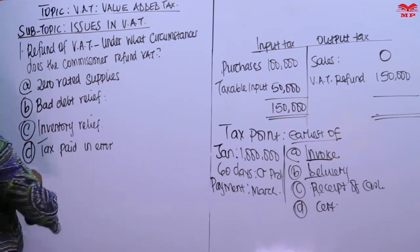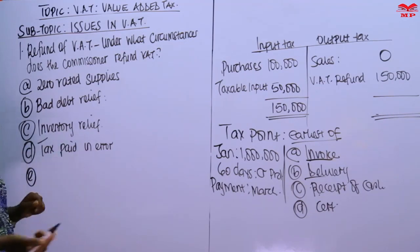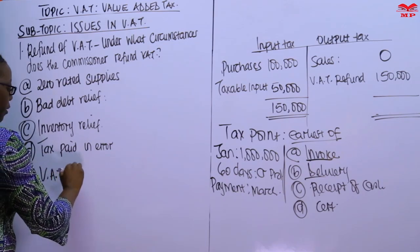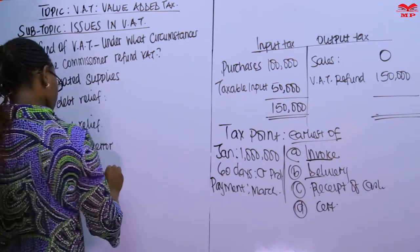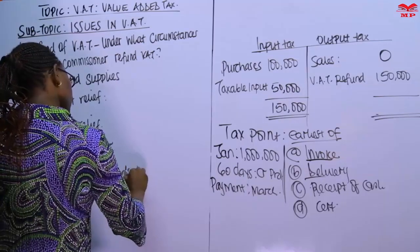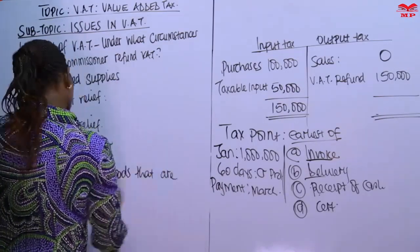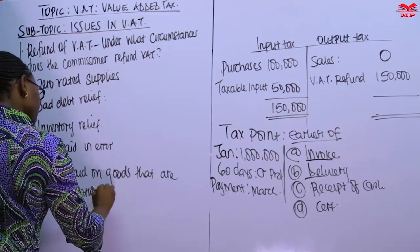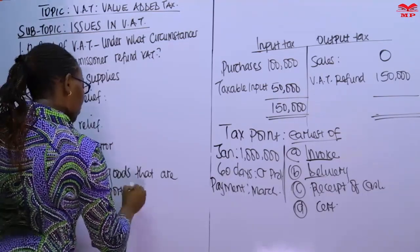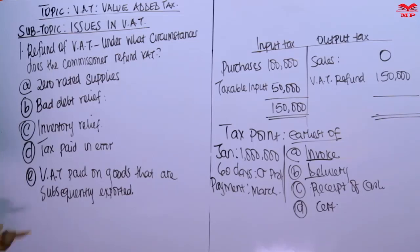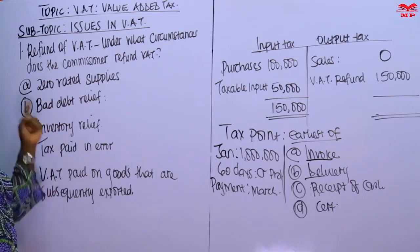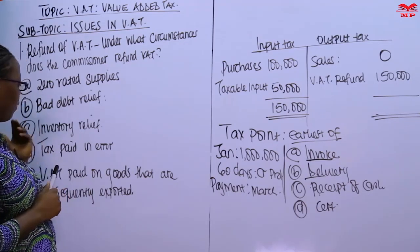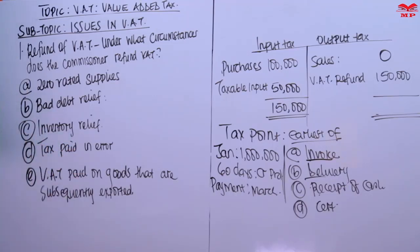The final circumstance is when VAT has been paid in respect of goods that are subsequently exported. Remember that all exports are zero-rated, so you need to recover that VAT. These are the circumstances under which the commissioner will refund VAT that a taxpayer may have paid.